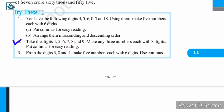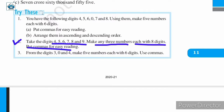In question number two, we are asked: take these digits — four, five, six, seven, eight, and nine — and make any three numbers each with eight digits, putting commas for easy reading. Now look at the digits: we have six numbers — four, five, six, seven, eight, nine. We need to make three eight-digit numbers.